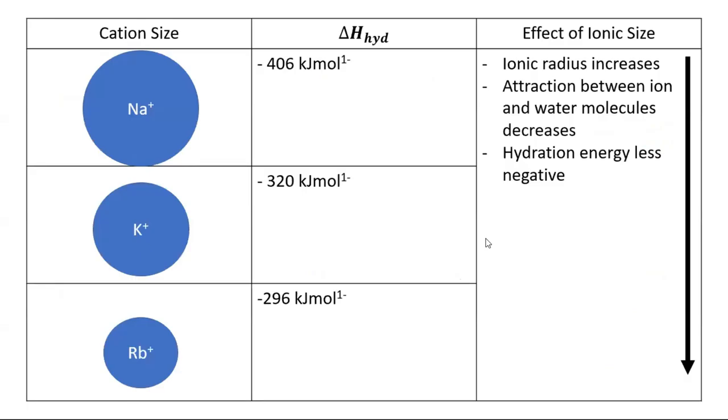For cation size, as you go down a group, delta H hydration is less exothermic. Ionic radius increases, attraction between ion and water molecules decreases, so hydration energy becomes less negative.